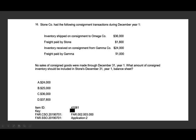Let's go ahead and answer these questions. Stone Company had the following consignment transactions during December. Inventory shipped on consignment to Omega — so they shipped inventory to Omega. Freight paid by Stone: $1,800. Inventory received on consignment from Gamma — so they shipped some and received some. Freight paid by Gamma: $1,000. Inventory on consignment to Gamma: $36,000. Freight paid by Stone: $1,800. Inventory received on consignment from Gamma is $24,000. Freight paid by Gamma is $1,000.